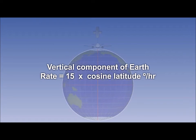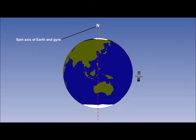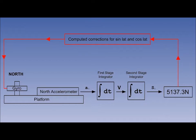The cosine of zero degrees (latitude of the equator) is 1; the cosine of 90 degrees (latitude of the pole) is 0. The vertical component of earth rate is given by: 15 × cos(latitude) degrees per hour. Corrections for earth rate, based on sine and cosine of the latitude, need to be computed and passed back to the platform to keep it level as the Earth rotates. Latitude is constantly updated in the north channel, continuously calculating 15° × sin(latitude) and 15° × cos(latitude) per hour, passed to the appropriate channel of the platform.